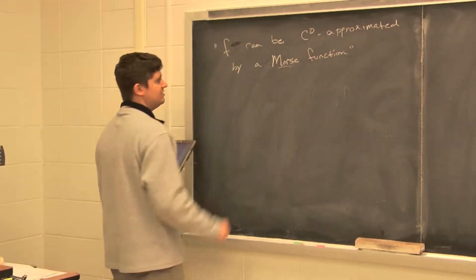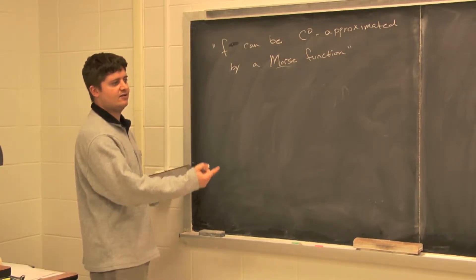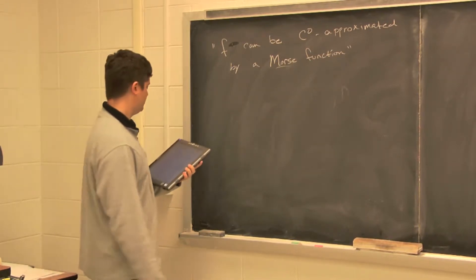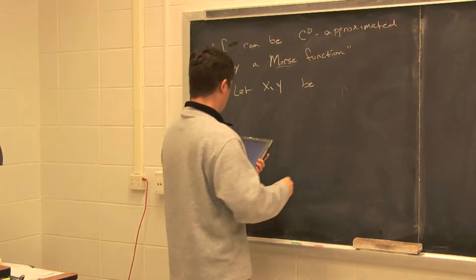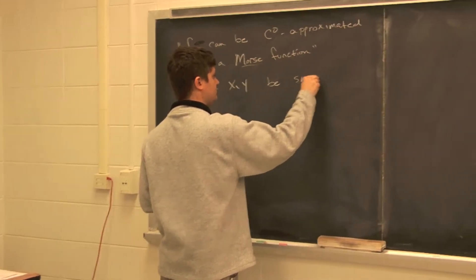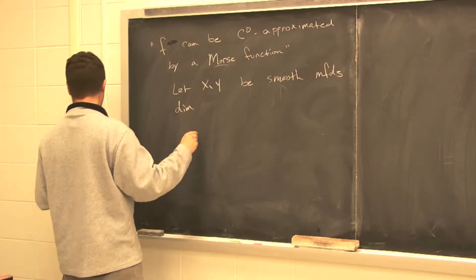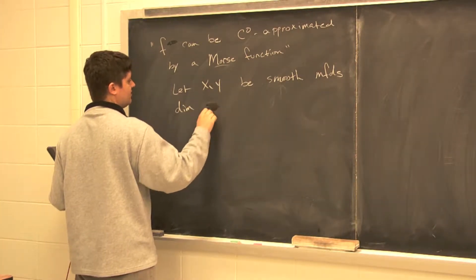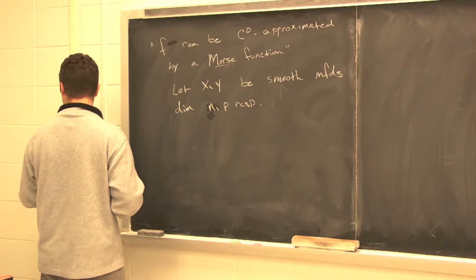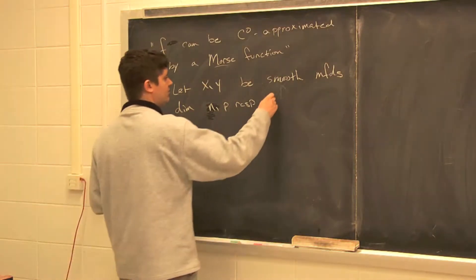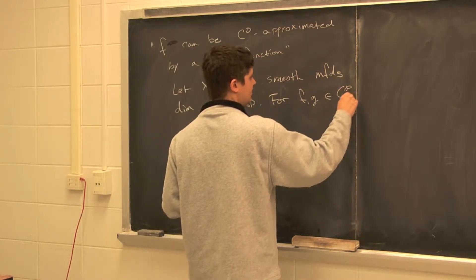Actually, Morse is kind of a distraction. This is going to be for any pair of manifolds, not just x and R^1. So let X and Y be smooth manifolds of dimension n and p, respectively.